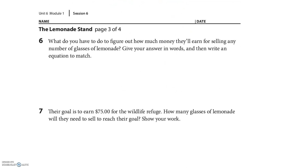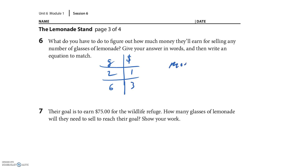What do you have to do to figure out how much money they'll earn for selling any number of glasses? Every glass is 50 cents. Think about it — if they sold 2 glasses the money would be $1; if they sold 6 glasses at 50 cents per glass, they made $3. So: money equals glasses divided by 2.